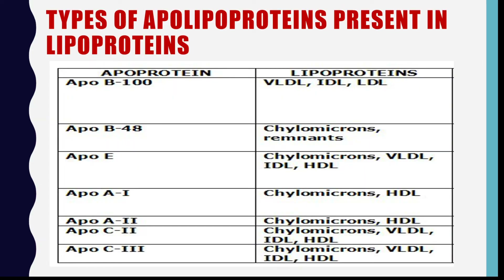Apolipoproteins: The protein part of lipoprotein is called apolipoprotein. All apoproteins are mainly synthesized in the liver and help to solubilize lipids. Apoprotein B100 is seen on VLDL, IDL and LDL. Apoprotein B48 is present on chylomicrons and chylomicron remnants. Apoprotein E is present on chylomicrons, VLDL, IDL and HDL. Apoprotein A1 and A2 are seen on chylomicrons and HDL. Apoprotein C2 and C3 are present on chylomicrons, VLDL, IDL and HDL.